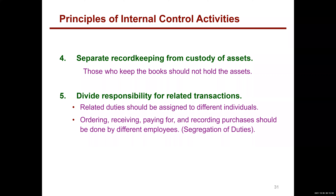If he couldn't order — if he could only requisition and the purchasing department had to place the order — he wouldn't have been able to do it. Or if the receiving department received the goods, and accounts payable in the accounting department handled the invoice and payment, that Dean wouldn't have had authority over the whole sequence of the transaction. So segregation of duties breaks it up so not only one person is responsible for the whole transaction.